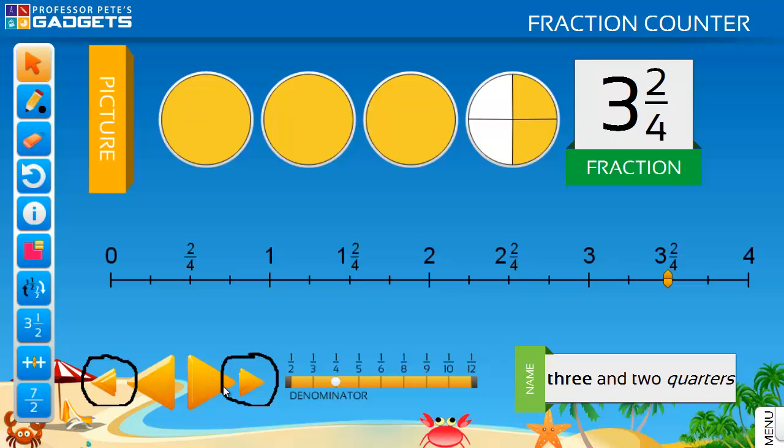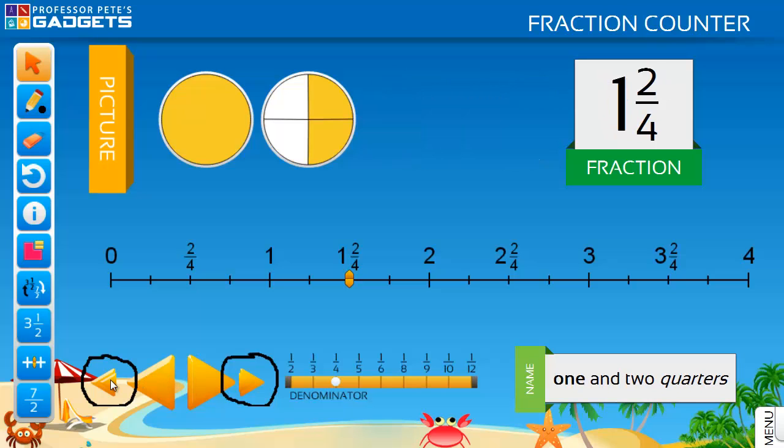Count forwards or backwards in whole ones by clicking on the smaller double arrow.